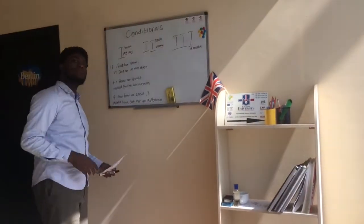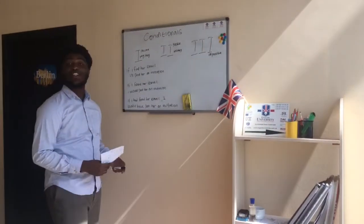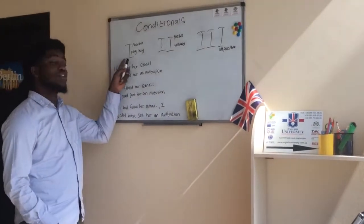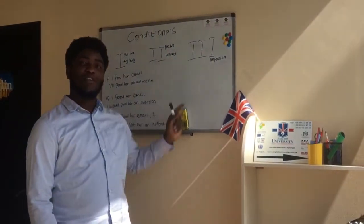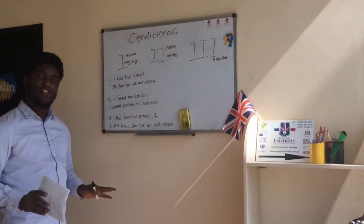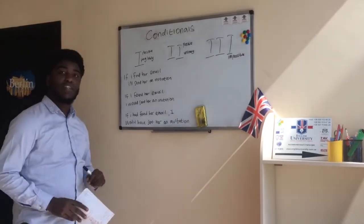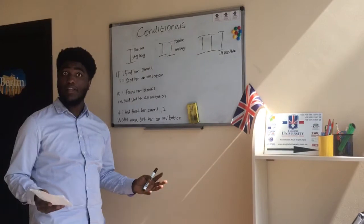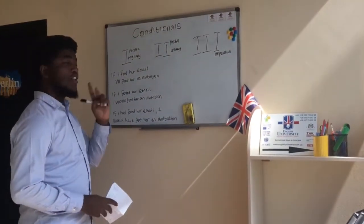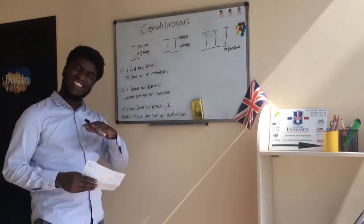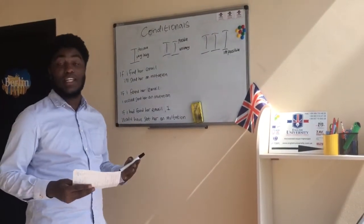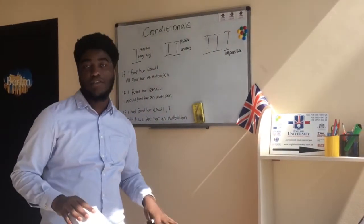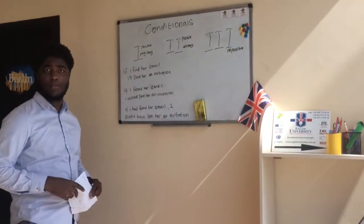Hello guys, welcome! Let's learn about conditionals. We have three groups of conditionals: the first group, the second group, and the third group. The first group is about things that are possible and very likely to happen. The second group is possible but unlikely — it may not happen but it could. The third group is impossible — it can never happen.